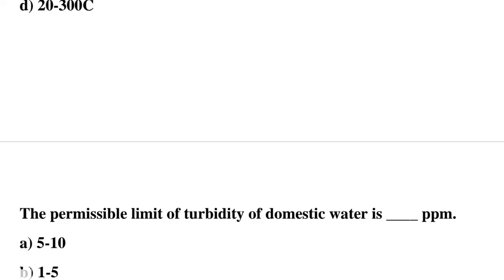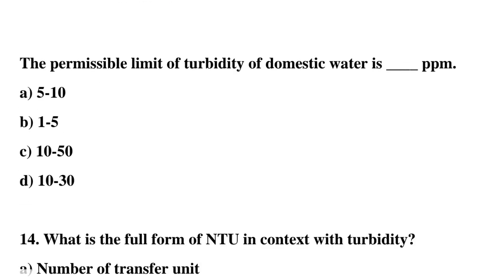Next question: the permissible limit of turbidity of domestic water is — ppm. Option A: 5 to 10 ppm, option B: 1 to 5 ppm, option C: 10 to 50 ppm, option D: 10 to 30 ppm. The correct answer is option A: 5 to 10 ppm.